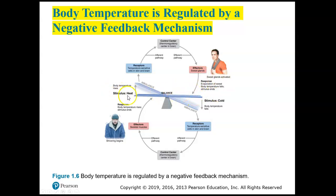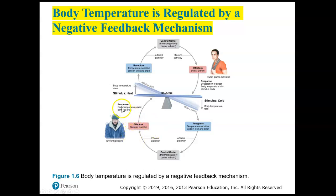The response is opposite of the initial stimulus — that's negative feedback. If the stimulus is that body temperature falls and the person becomes colder, the receptors in skin and brain send information to the hypothalamus, which sends information to skeletal muscles to cause shivering. The response is that body temperature rises, which is opposite of the stimulus. Many conditions are regulated by negative feedback.